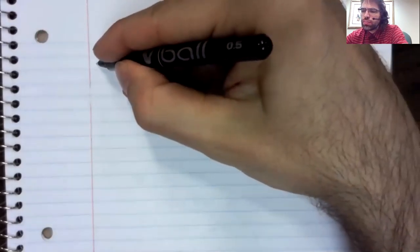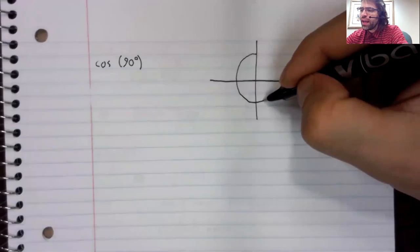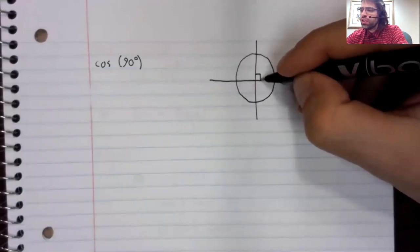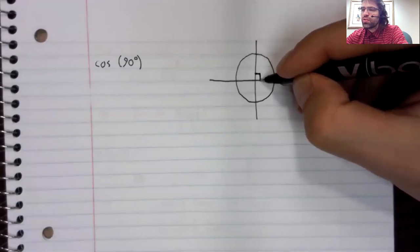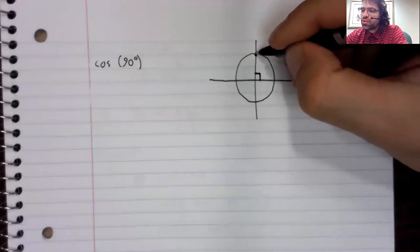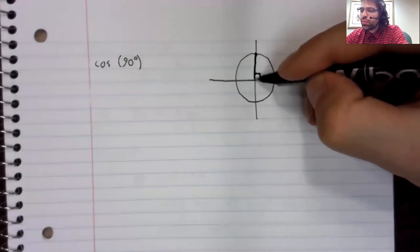So you can talk about, for example, the cosine of 90 degrees, and ordinarily we won't be able to find cosines and sines in our head,